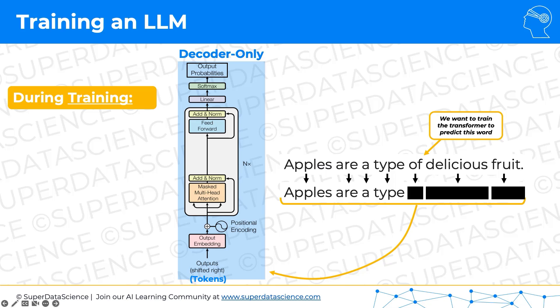In the upcoming tutorials, we'll have some very cool breakthroughs and we'll understand how there's going to be a lot of training done in one go in parallel in a transformer. But for now, for the sake of this tutorial, we're just going to focus on this one sample — 'apples are a type of' — and we'll see exactly how the error is calculated and what is backpropagated through the network.